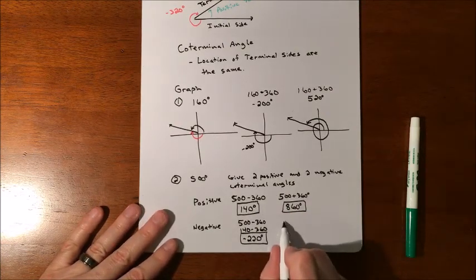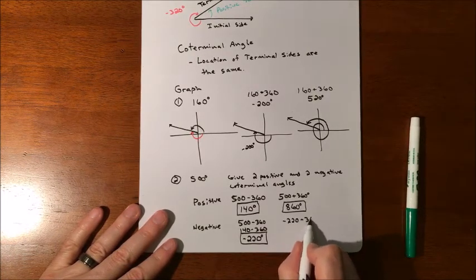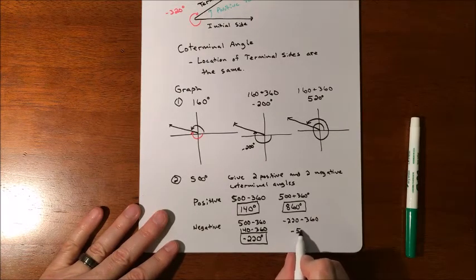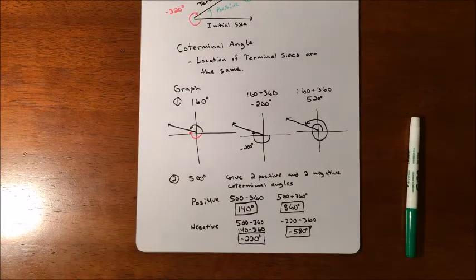But you wanted two negatives and two positives. So here's your two positives. So then you just go further. So now you just kind of start with the negative 220 and subtract 360, and that's going to get you a negative 580.